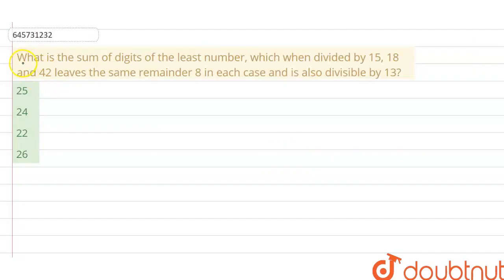What is the sum of digits of the least number, which when divided by 15, 18 and 42, leaves the same remainder 8 in each case, and is also divisible by 13? Right, so we have to find a number that is divisible by 15, 18 and 42, and it is divisible by 13. So we need to find the smallest one, the least one.